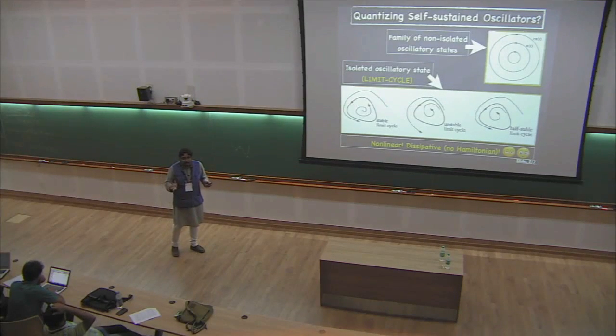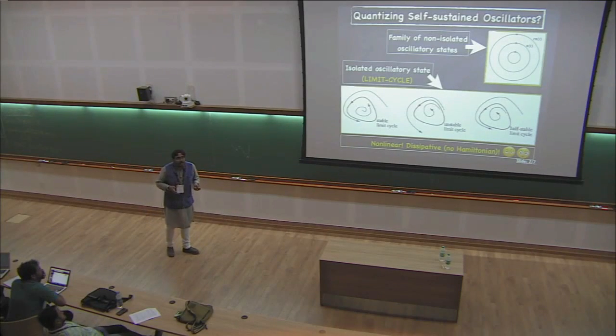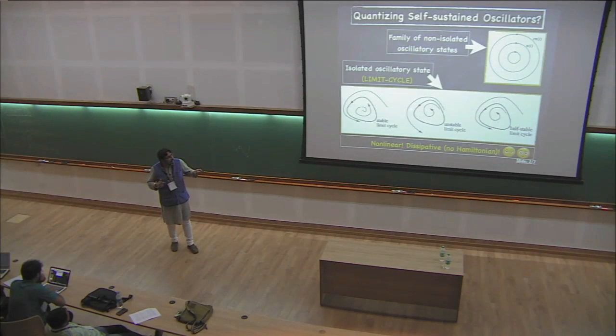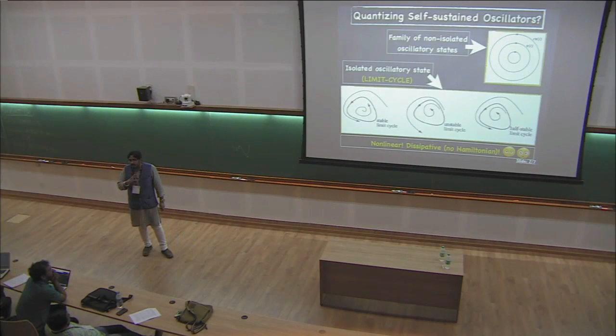Formalism-wise, what does it even mean? This is, of course, a non-linear problem because limit cycles can only appear in non-linear dynamical systems. And because it has to be dissipative, because attractors cannot exist in a system which has conserved quantities. In Hamiltonian systems, I cannot get a limit cycle. That means this kind of system does not have a Hamiltonian.